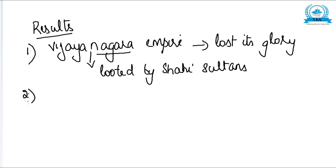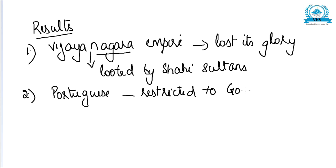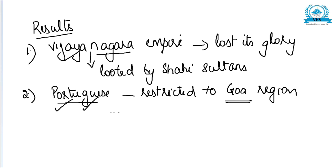The second result was that the Portuguese were restricted to the Goa region. Previously, Krishnadevaraya had given special permission for Portuguese trade. But after the Shahi Sultans came to power, they restricted the Portuguese only to Goa, which was a setback for Portuguese trade.